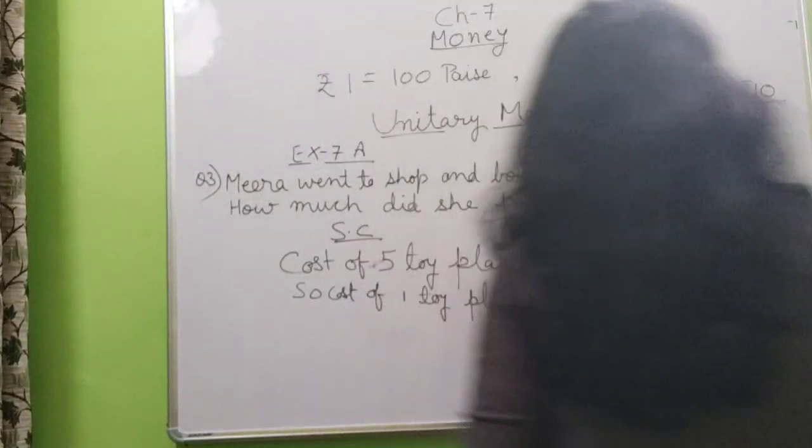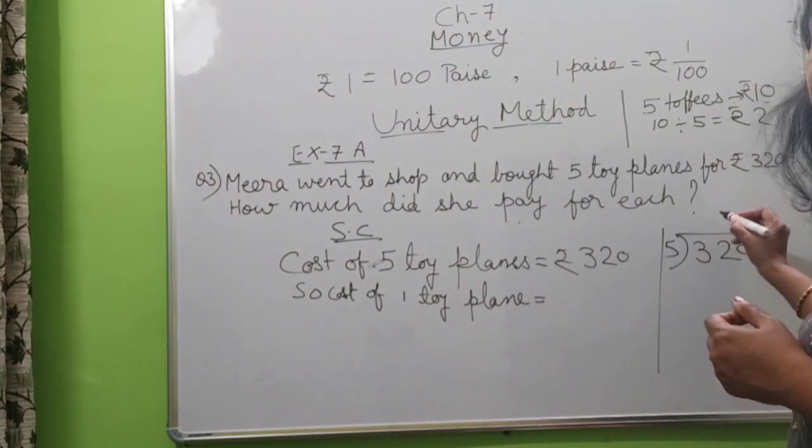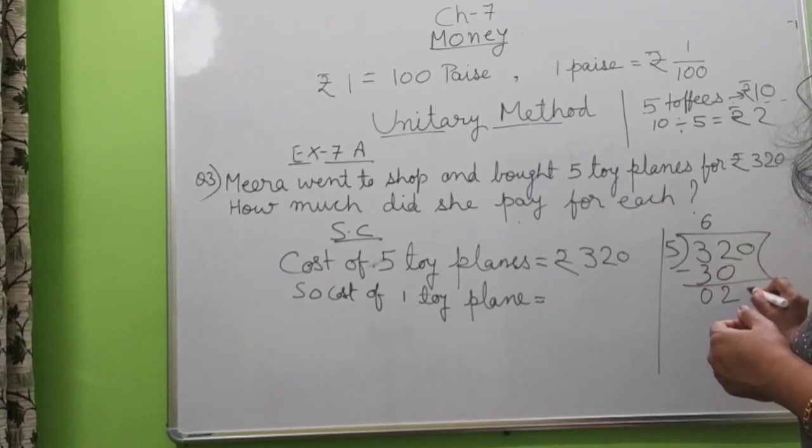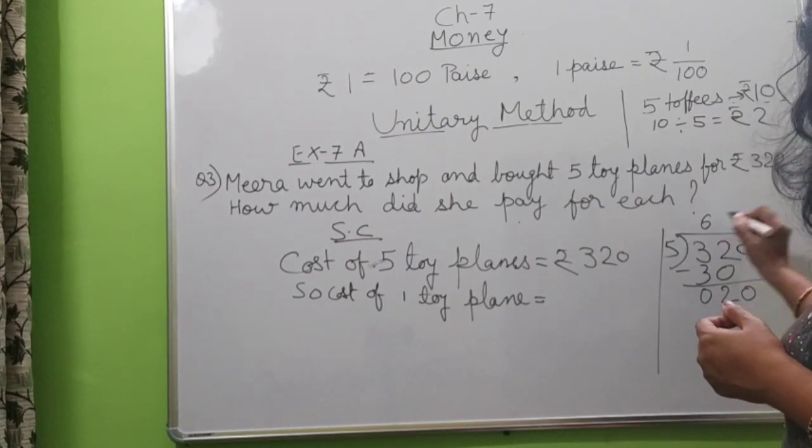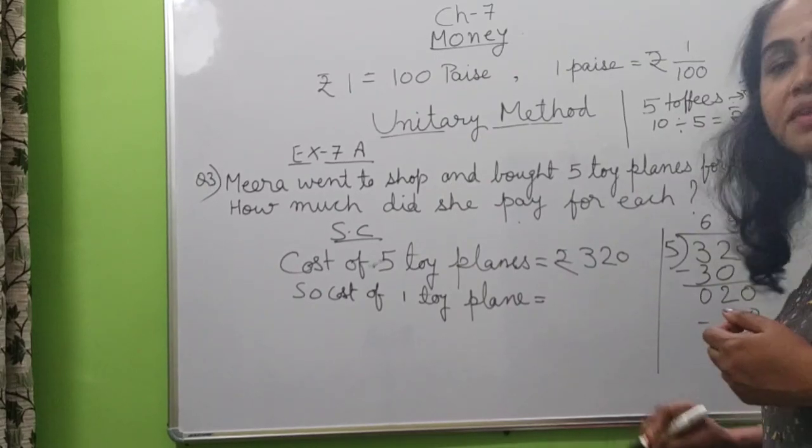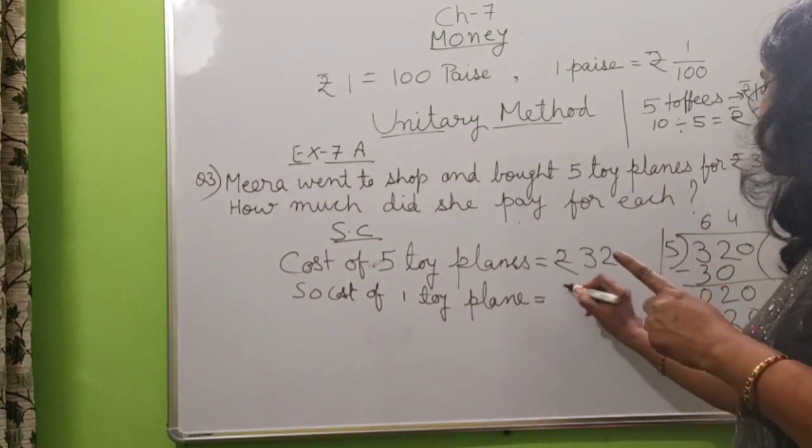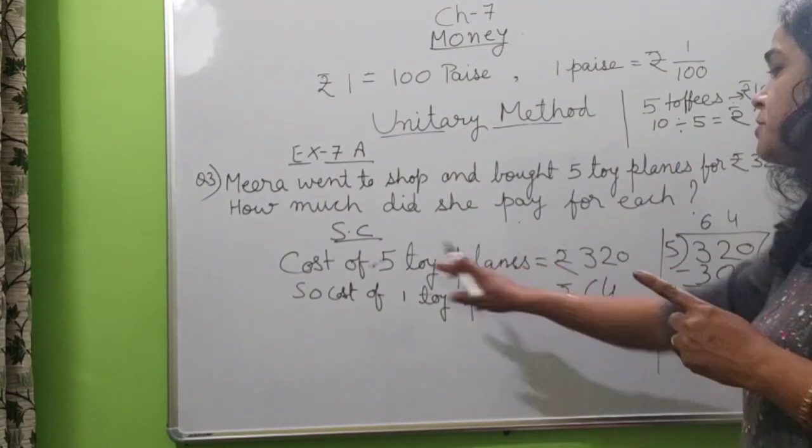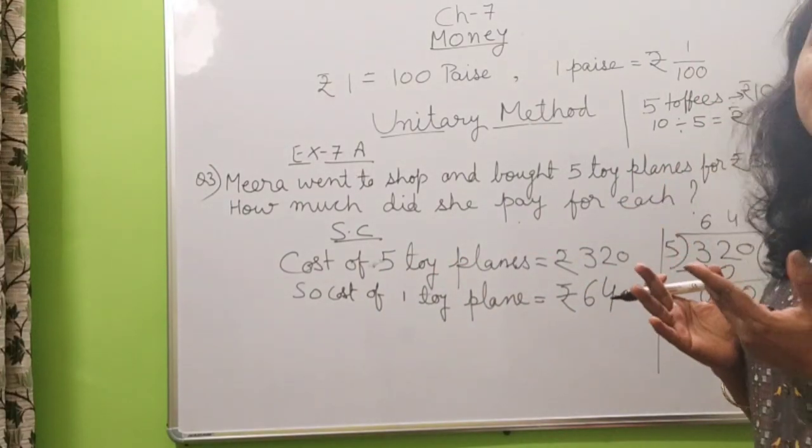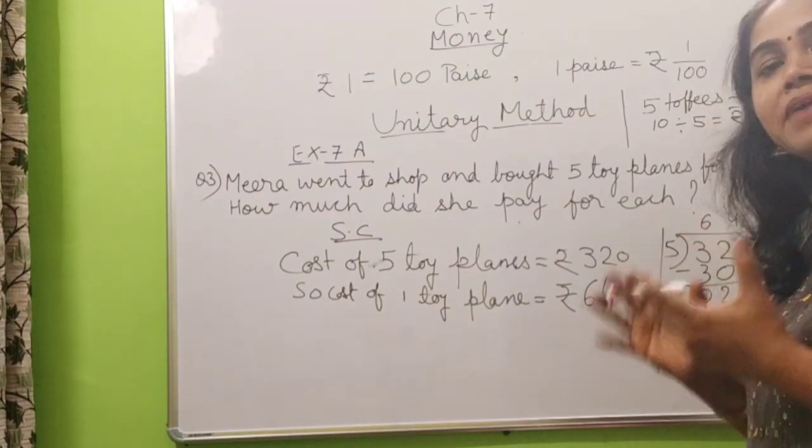So what will come? 5 into 6, 30, 2, 0 will come down. Now 5 into 4. So your answer is 64. So cost of 1 toy plane is rupees 64. Always remember if cost of 5 toy planes are 320 then obviously cost of 1 toy plane will be lesser. And for that you have to divide.